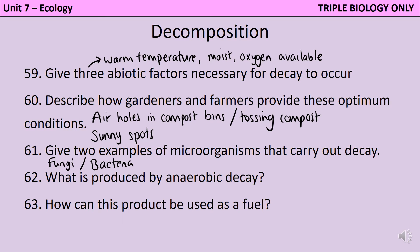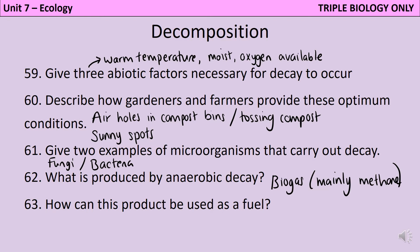Where decomposers are left to anaerobically decay rather than aerobically decay, they may produce biogas. This is a mixture of gases but is mainly methane. Biogas can be used as a fuel when it's produced in a fermenter and then burned.